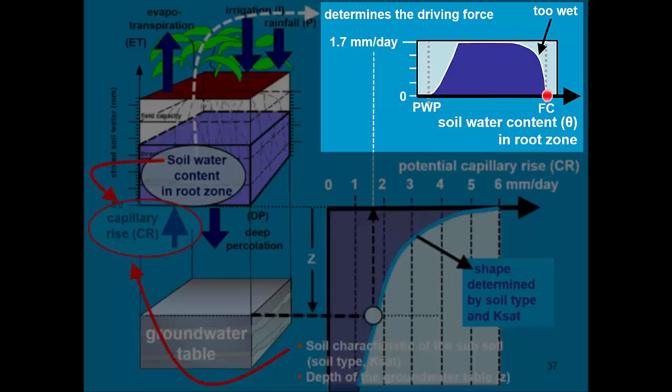If the root zone becomes drier, the capillary rise will increase and reach the potential value of 1.7 mm per day. However, when the root zone becomes very dry, the driving force is strong, but the hydraulic conductivity is very small and the capillary rise drops again to zero at wilting point.